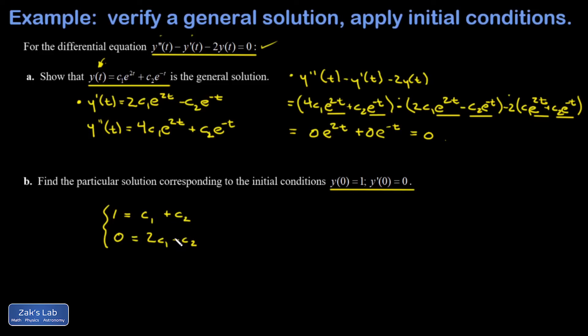Now I have a little system of equations to solve, and it's set up for c₂ to eliminate in one step, so I'm just going to do that. I'm going to add the two equations, and on the left-hand side I get 1, and on the right-hand side I get 3c₁, and I've immediately got c₁ is 1/3.